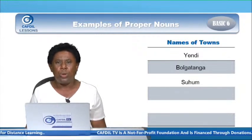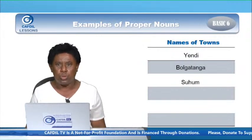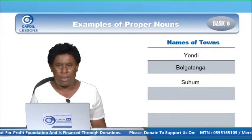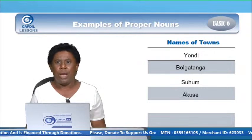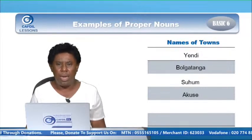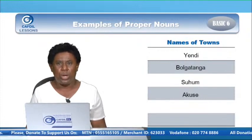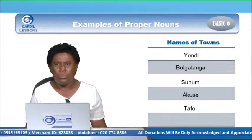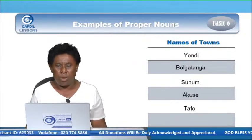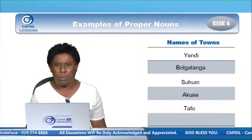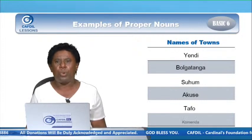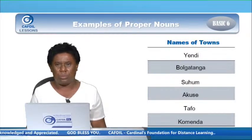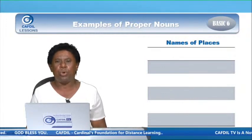Sohum — it's also a particular name given to a place, a town called Sohum, beginning with capital S, and it's a proper noun. Akusi — begins with capital A, a particular name given to a town, and it's a proper noun. Tafu — a town beginning with capital T, a name of a particular place, and it's a proper noun. Komenda — a particular name given to a town, starts with capital K, because it's a proper noun.